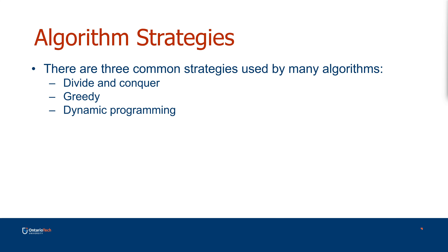Now let's talk about algorithm strategies. We'll cover three: divide and conquer, greedy, and dynamic programming. There are a few others you'll learn later, but these are a good starting point — some other strategies are extensions of these ideas. These strategies are used to solve many common computer science problems, and you'll see dozens of algorithms employing each strategy throughout your undergraduate degree.